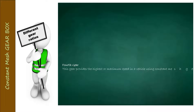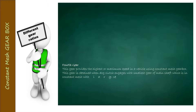Fourth gear provides the highest or maximum speed in a vehicle using the constant mesh gearbox. This gear is obtained when the dog clutch engages with the smallest gear of the main shaft, which is in constant mesh with the largest gear of the lay shaft, providing maximum speed and minimum torque.